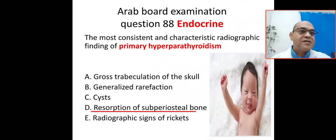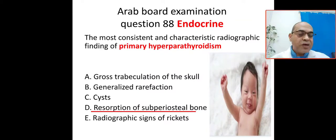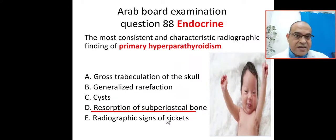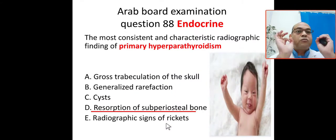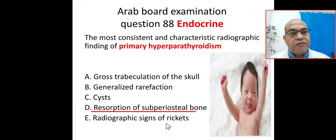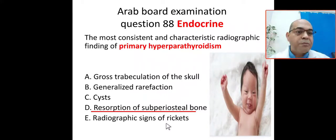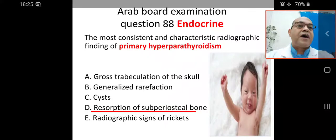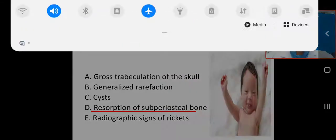The radiographic signs of rickets is not the answer here. So to summarize: the most consistent and characteristic radiographic finding of primary hyperparathyroidism is resorption of sub-periosteal bone. Please remember this — it will help you succeed and get a lot of marks. Thank you so much.